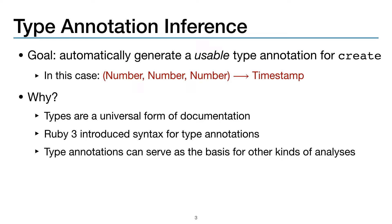So why would we want to pursue a goal like this? Well, types are a universal form of documentation. And what's more, Ruby 3 recently introduced syntax for writing type annotations, which means it'd be useful to have a system for generating them. And on top of this, type annotations can serve as the basis for other kinds of program analysis, like code completion for IDEs.